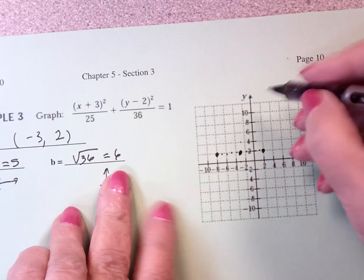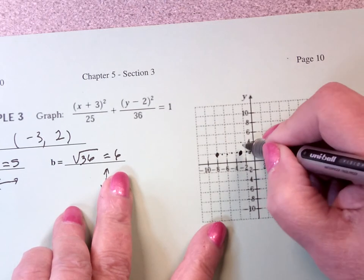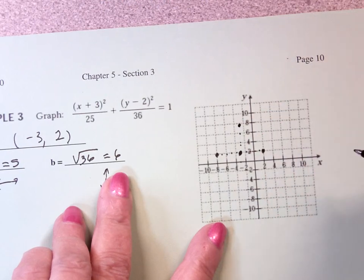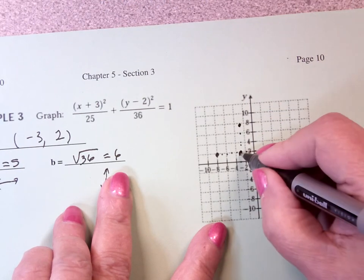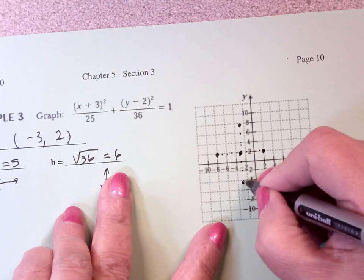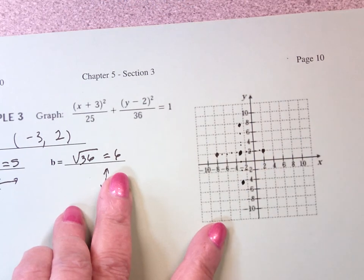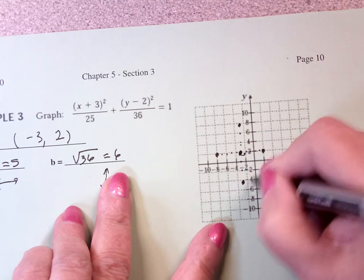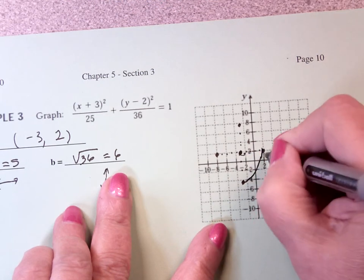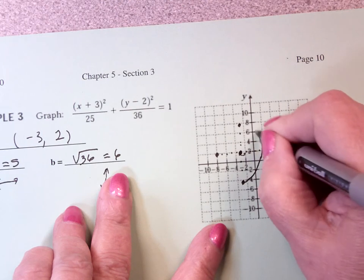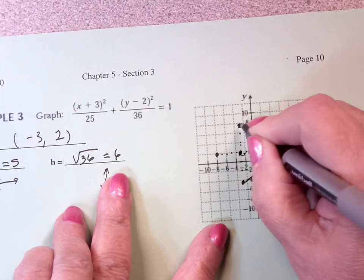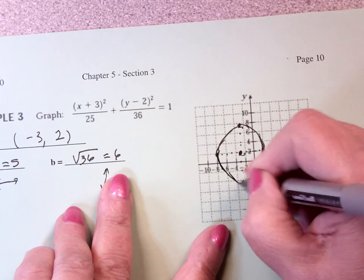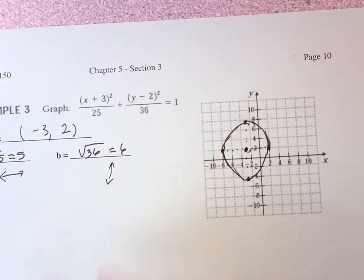And then 6 up and down. So that's easy enough. 2, 4, 6. And 2, 4, 6. Even numbers are nice. And I was on the line there. And then all we need to do is connect the dots and there it is.